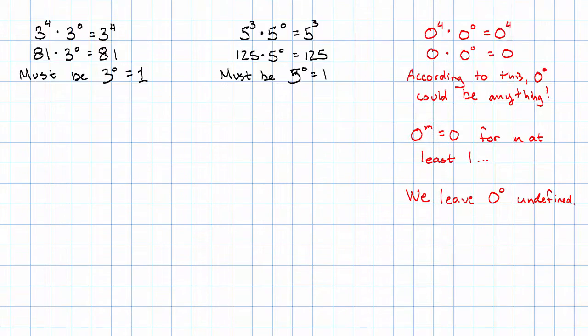So what do we end up saying? For any number b, b to the first power is just b. And for any number b except for zero, remember we're leaving zero to the zero undefined, but for any other number b to the zero is just the number one.